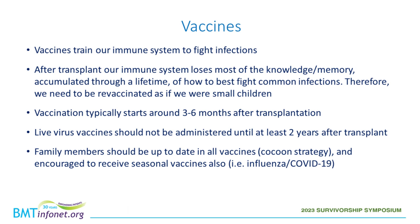Vaccination. Vaccines train our immune system to fight infections. After transplant, our immune system loses most of the knowledge or memory accumulated through a lifetime on how to fight common infections. Therefore, after transplant, we need to be vaccinated as if we were small children. Vaccination typically starts around three or six months after transplantation. However, some vaccines may be harmful during the first two years after transplantation — specifically those made of live, debilitated viruses. Always discuss with your doctor which vaccines you're supposed to receive.